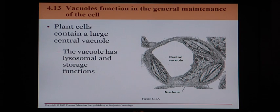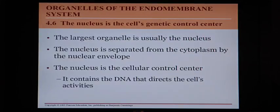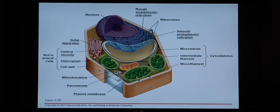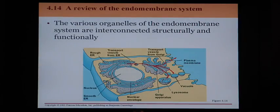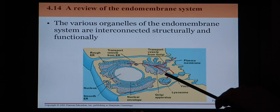Here's something different about the plant cell: it contains a large central vacuole. The vacuole has both lysosomal and storage functions. It provides storage for the plant cell and also performs lysosomal functions — helping the plant digest and get rid of things it doesn't need, as well as acting as a storage system.